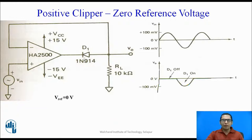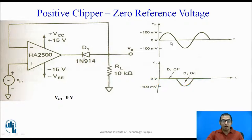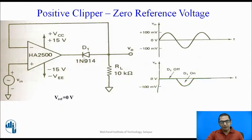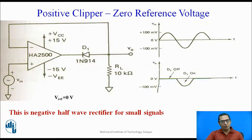This is how the output will look. The rule is: when the input waveform is above the reference voltage, that part is clipped off. Since the reference voltage is zero volts, all parts of the waveform above zero are clipped off, and all portions below zero remain as is. The two positive half cycles are clipped off and the negative portions remain. Comparing input and output, this is nothing but a negative half-wave rectifier — a special application of the op-amp clipper used as a small signal rectifier.